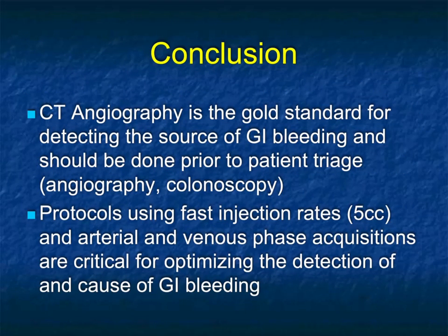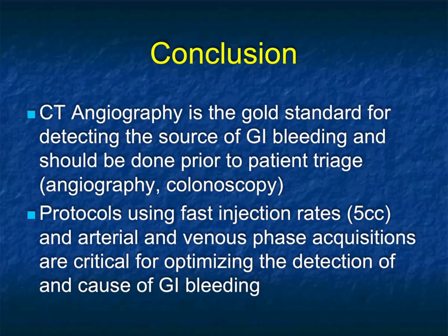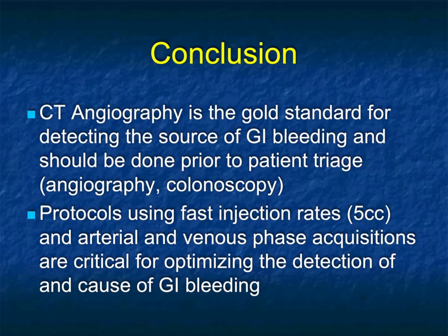In conclusion, CTA is the gold standard for detecting the source of GI bleeding, and it's a way of triaging the patient. Whether the source is the stomach, small bowel, or colon, it's ideal. Detection and extent of bleeding, and determining the cause of bleeding, are all possible. The importance of protocols, fast injection rates, dual-phase imaging, and looking beyond axial images to coronal, sagittal, and 3D imaging all becomes very valuable. There are many more cases on the CTSS teaching file — get a good look at lots of cases so you really understand how to recognize even the most subtle of bleeds.